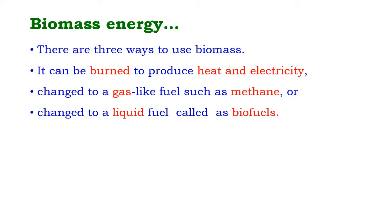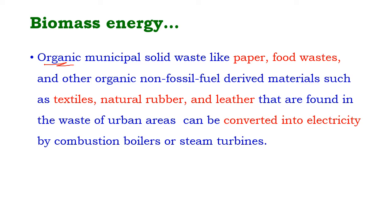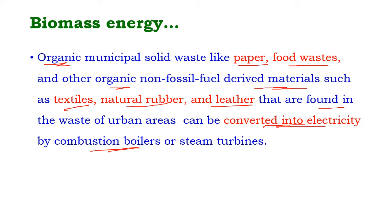Biomass energy is used in three ways: it can be burned to produce heat and electricity; it can be changed to a gas-like fuel such as methane and used for burning; and it can also be changed to a liquid fuel called biofuel to produce energy. Organic municipal solid waste like paper, food waste, and other organic non-fossil fuel materials such as textiles, natural rubber, and leather can also be converted into electricity by combustion boilers and steam turbines.